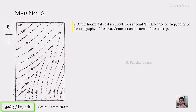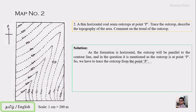The next question is similar: a thin horizontal coal seam outcrops at Point P. You need to trace the outcrop, describe the topography, and identify the outcrop pattern. The height at Point P is a 450-meter contour. Since it is a horizontal formation, the outcrop is simply parallel to the contour at that height, and you can trace the entire location along the 450-meter contour.